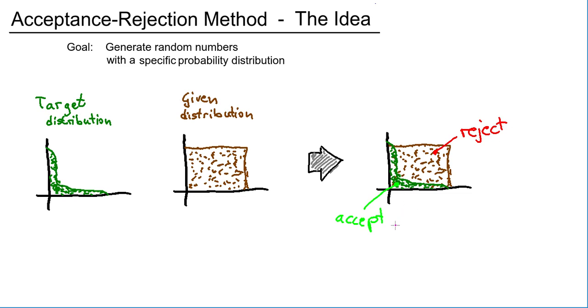That is the idea behind the Acceptance Rejection Method. However, there's one thing that might bug you as well as it bugged me.